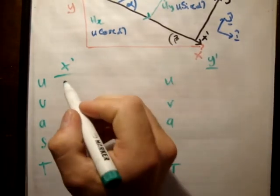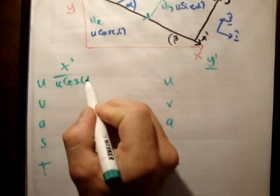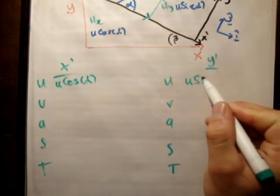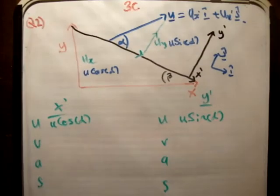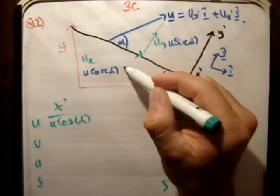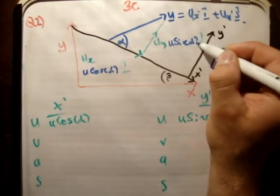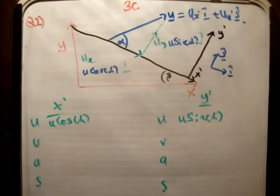So this is u cos alpha in the i hat direction, and this is u sin alpha in the j hat direction. That was reasonably straightforward — nothing we haven't done in the past.